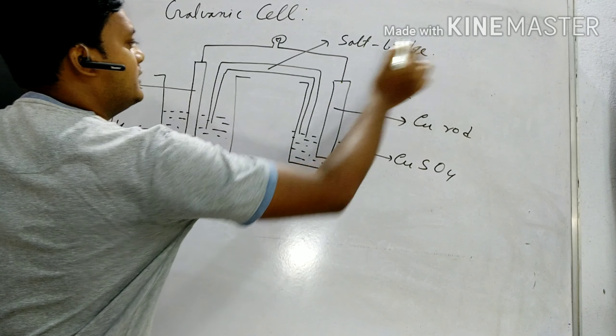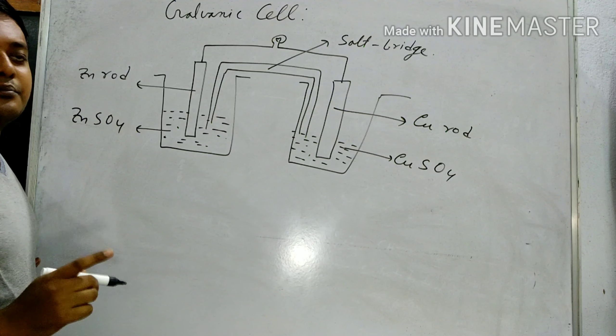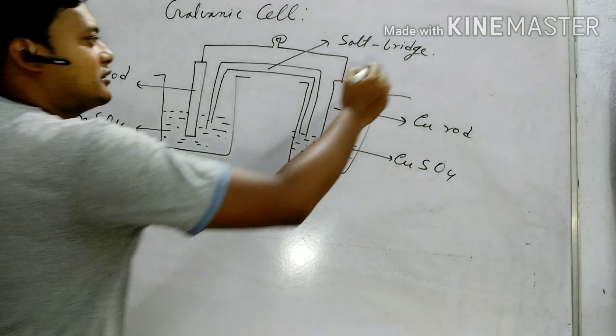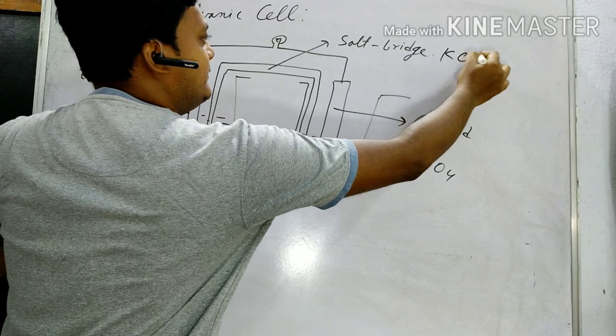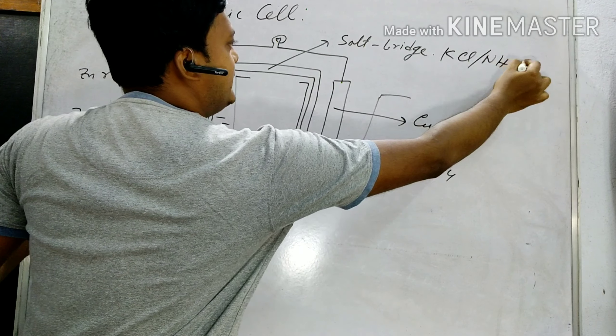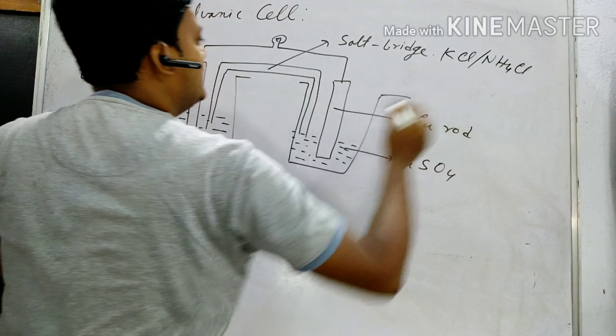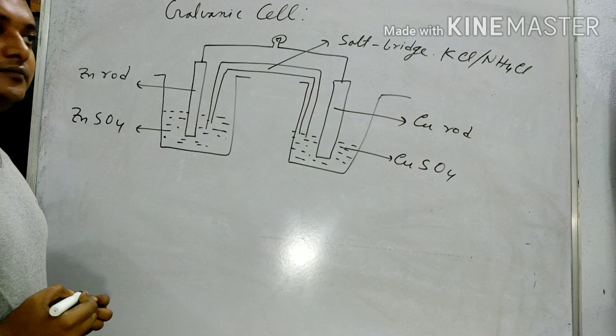The salt bridge contains some special electrolytes like KCl and Ammonium Chloride in Agar-Agar Gel.